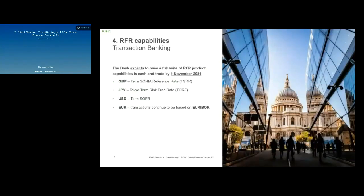The bank expects to have a full suite of RFR product capabilities for trade and cash ready by 1st November 2021. The bank is gearing up with the necessary platforms and architecture in place to offer RFR-based pricing. For term RFR: GBP will use term SONIA, JPY will use TORF, US dollar will use term SOFR, and Euro transactions will continue to be priced on EURIBOR as that benchmark continues to exist. By 1st November, the bank will be in a position to deal and transact using these term rates.